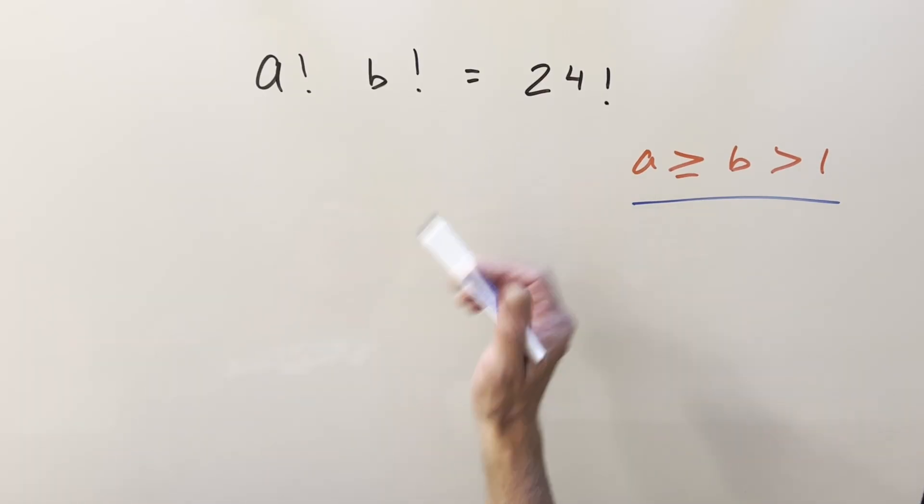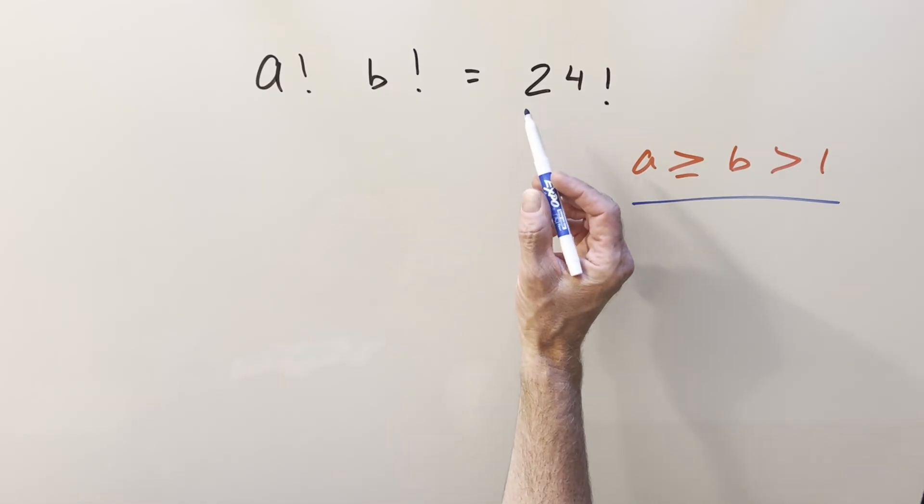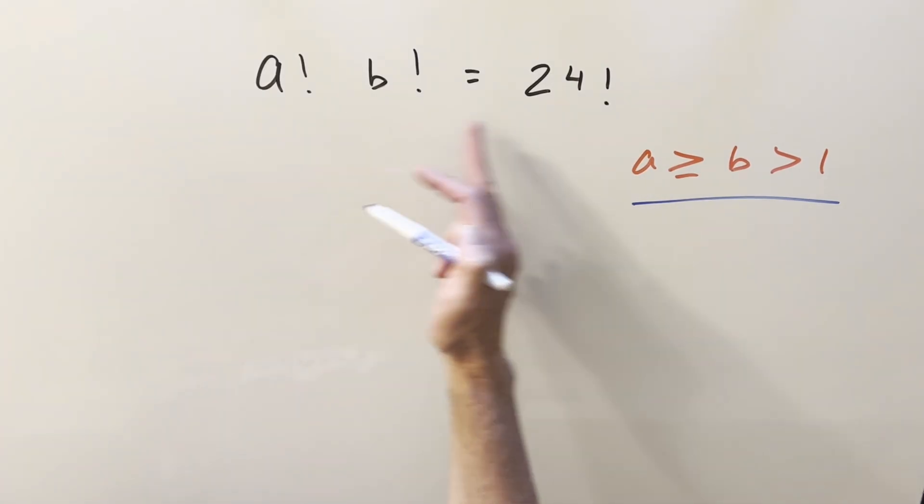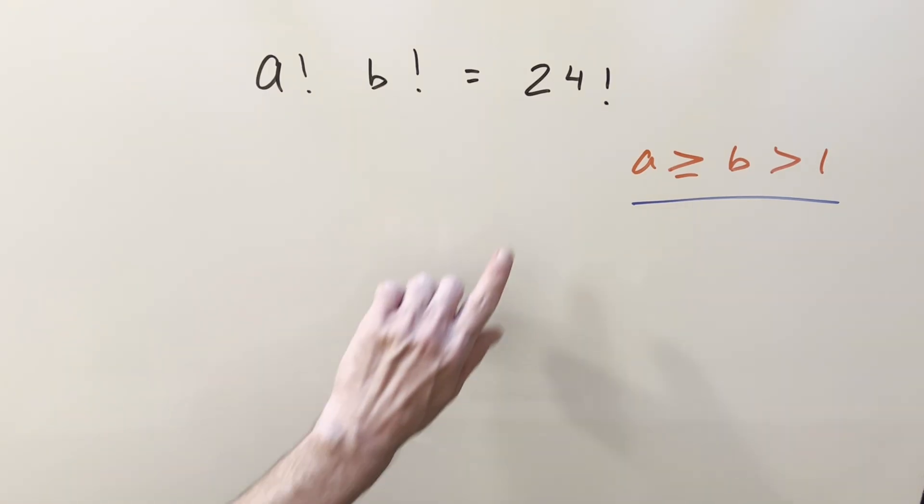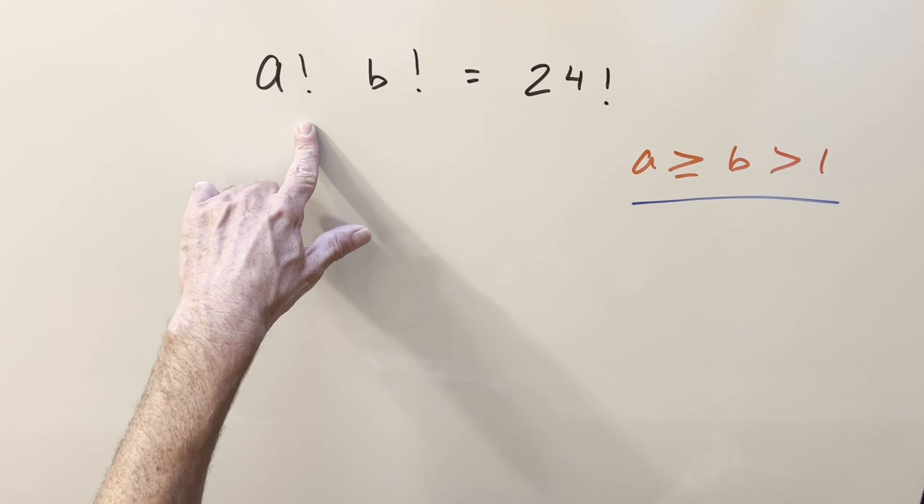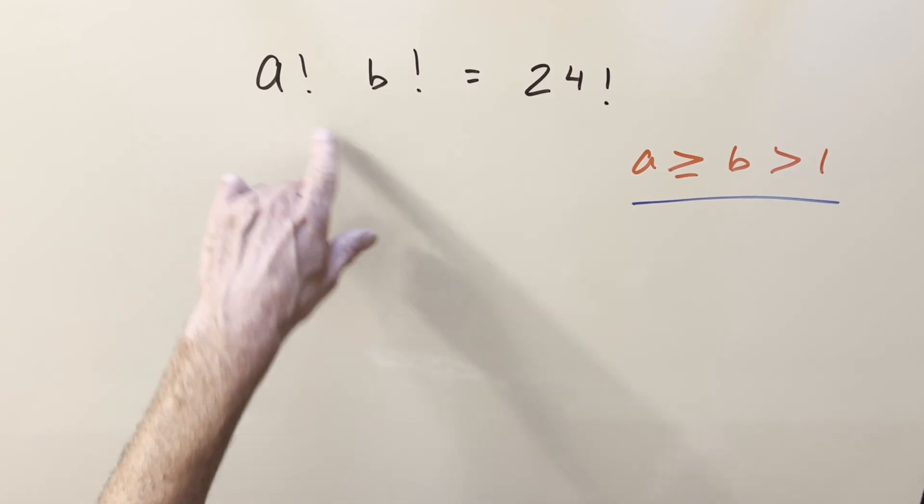With something like this, we can use the fundamental theorem of arithmetic, which tells us if we've got two integer values, these are both integer values, the prime factorization is going to be unique. So that means the prime factorization on the right side is going to be the same thing as the prime factorization on the left.